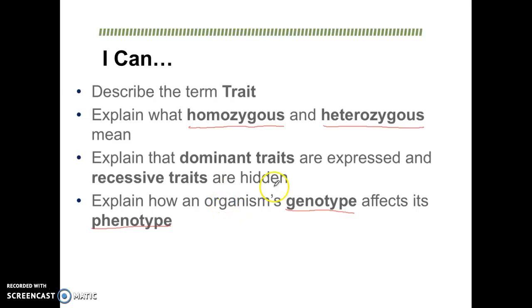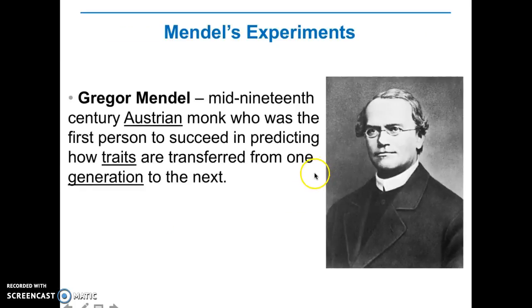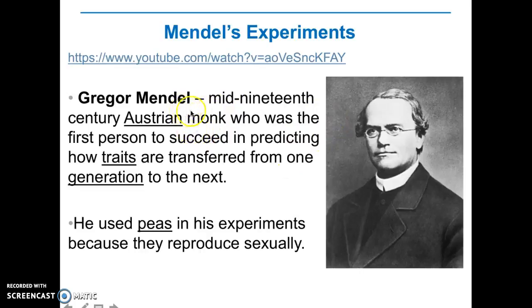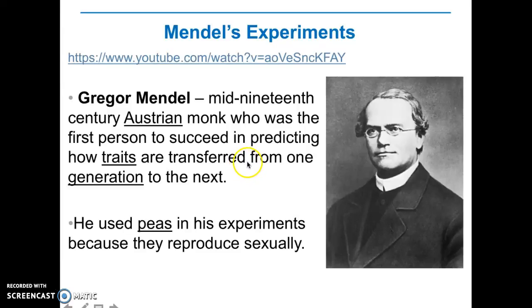I need you to make sure that you understand what these terms mean by the end of this lecture because we're going to use them very often. One of the things we're going to talk about is because of the work of this scientist named Gregor Mendel. Gregor Mendel was a mid-19th century Austrian monk who was the first person to succeed in predicting how traits are transferred from one generation to the next.